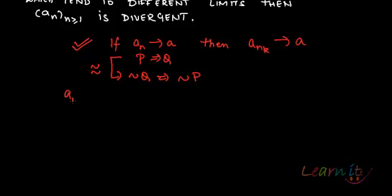What does that mean? That means that if a_nk does not converge to a, this implies that a_n does not converge to a.